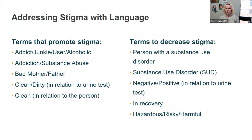Before we get started, I want to frame this talk around stigma by using inclusive and patient-centered language. Terms that promote stigma we will be avoiding include: addict, junkie, user, alcoholic, substance abuser, referring to urine tests as dirty, or persons as dirty or clean patients. Instead, we use person-first language — a person with substance use disorder — negative or positive urine tests, describing them as in recovery, and describing their behaviors as risky or dangerous rather than assigning a moral judgment.